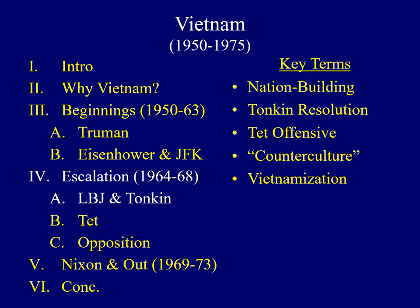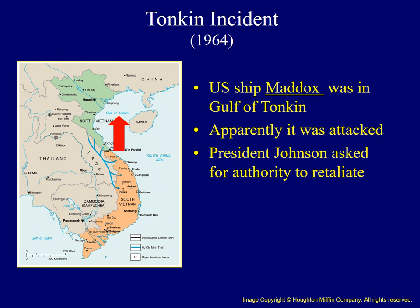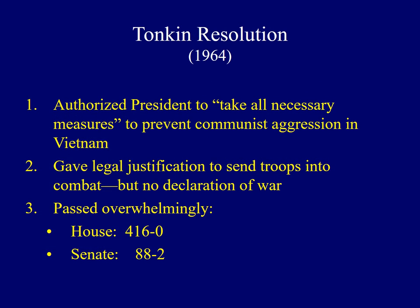American involvement escalated in the mid to late 1960s under President Lyndon Johnson. The United States never declared war in Vietnam, but due to an incident involving the American ship Maddox in 1964 — engaged in electronic espionage in the Gulf of Tonkin — the President was given authority to use force. Evidence of the attack was unclear, but Johnson quickly asked Congress for authority to retaliate. Congress passed a resolution allowing the President to take all necessary measures to fight communism in Vietnam, essentially giving Johnson a blank check to send troops into combat. Initially, there was near-unanimous support for the resolution in both houses of Congress.